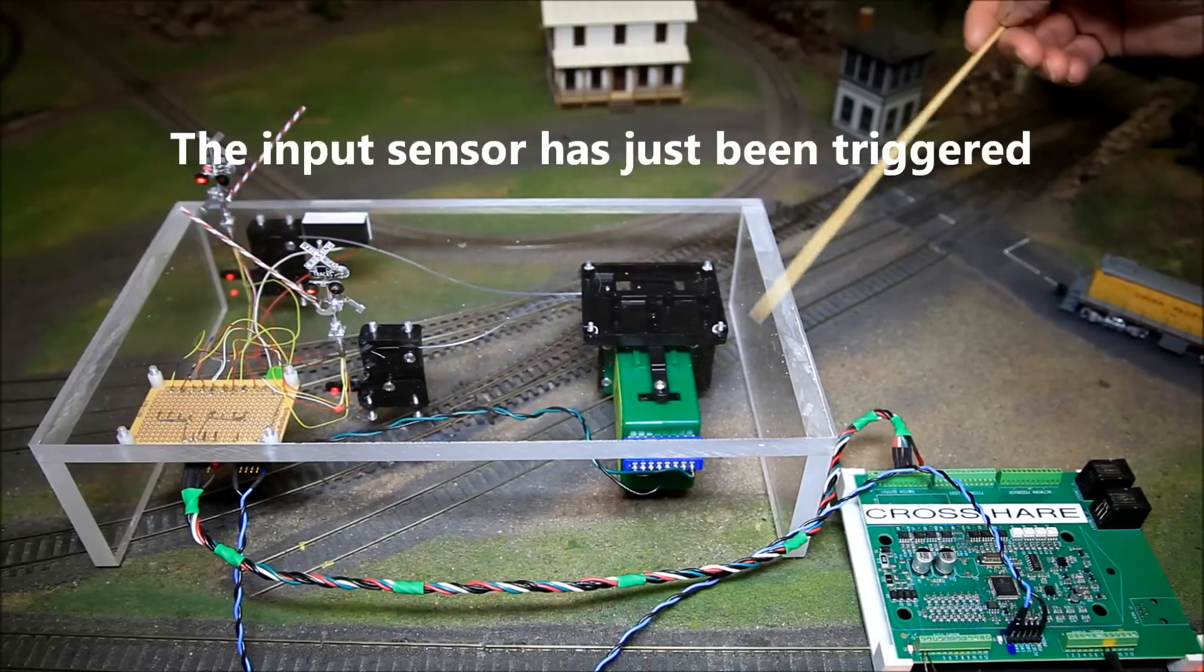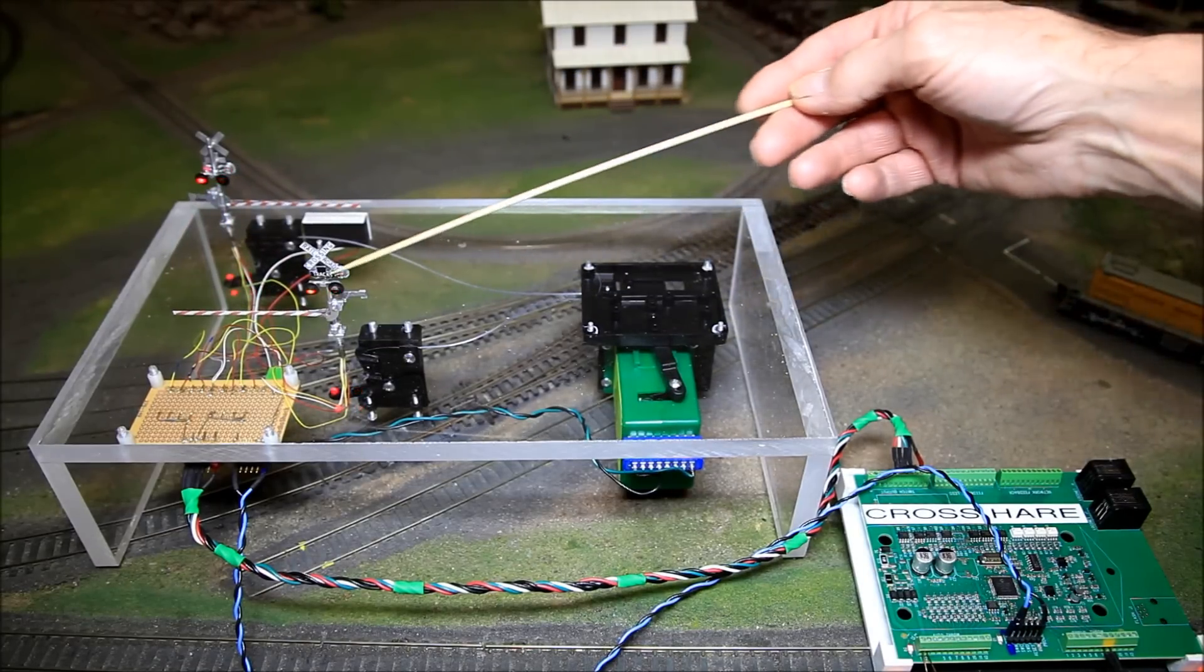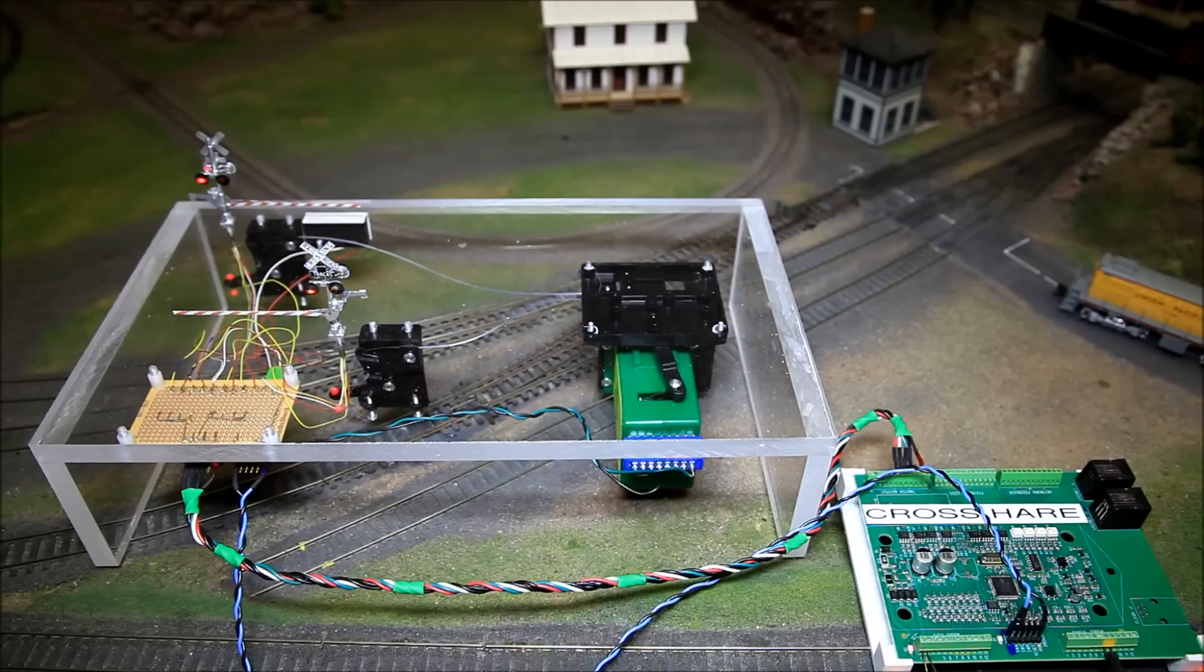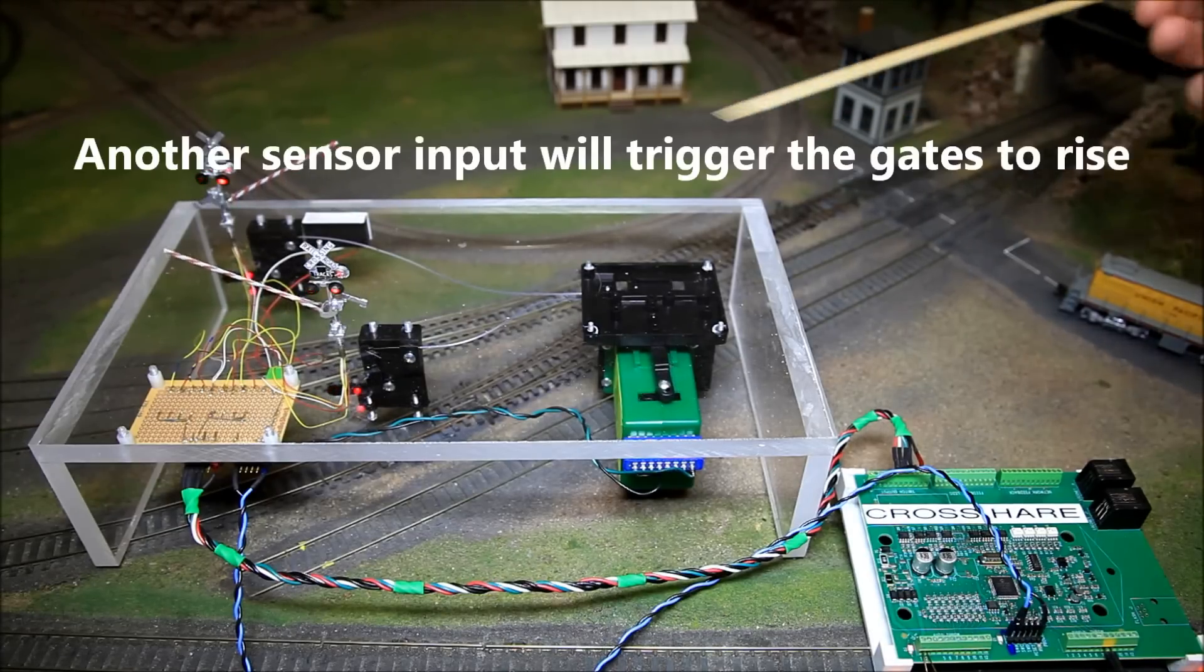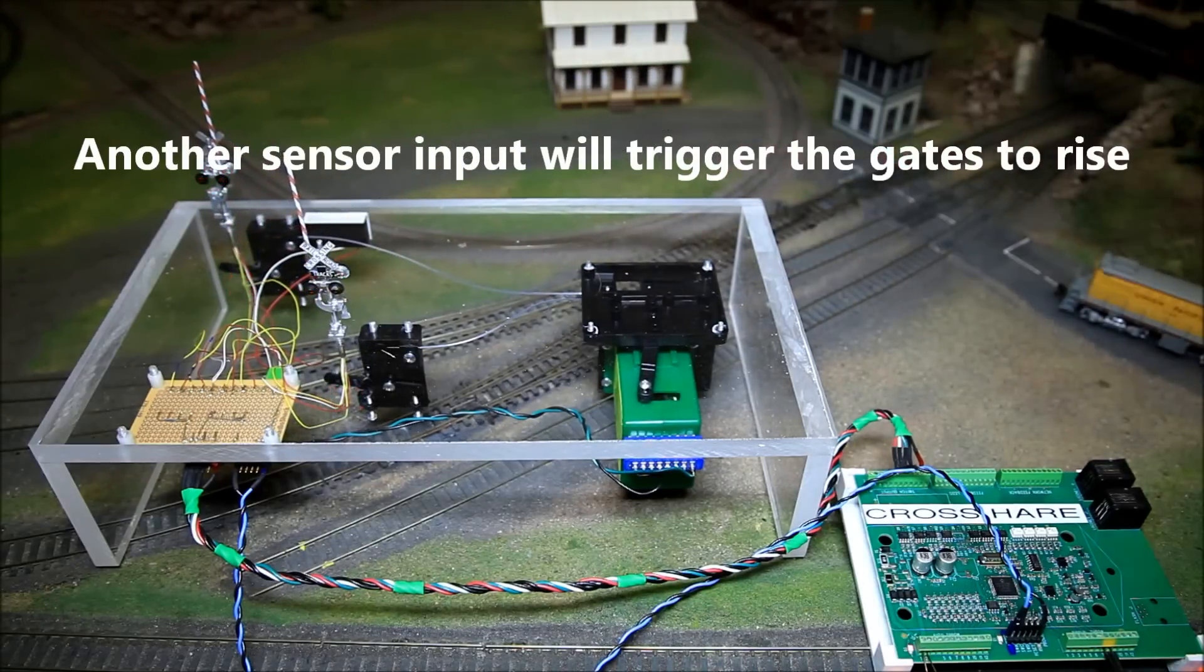Now we're providing flashing for the lights, as you can see. Once the train has passed, the gates come up, and once the gates are up, the lights fade away.